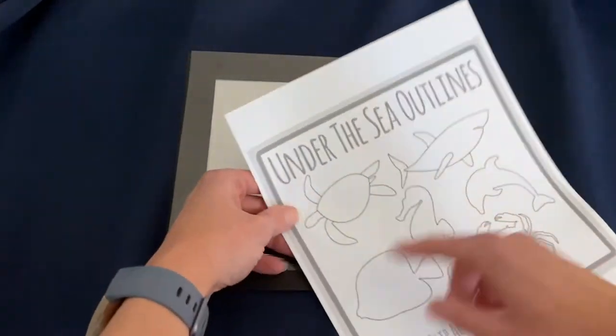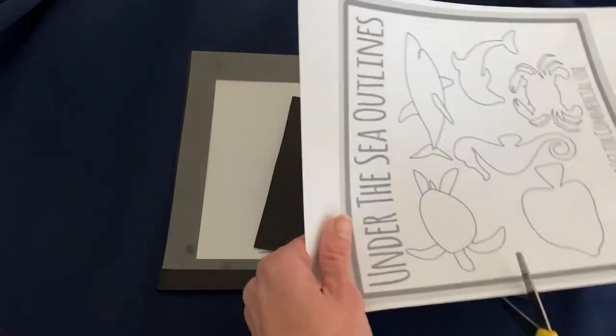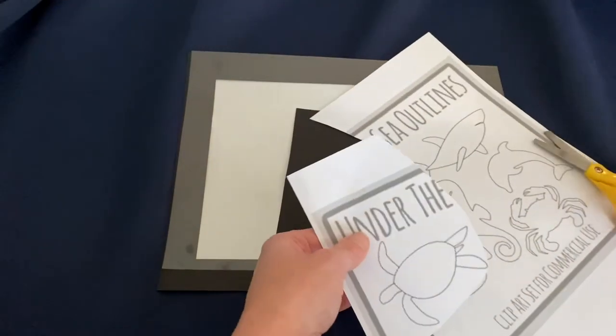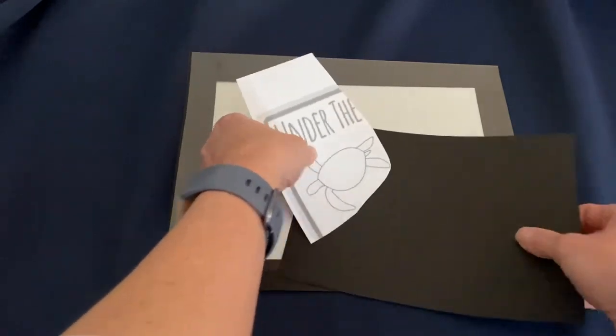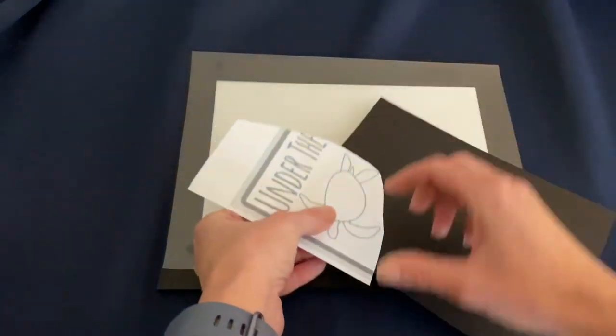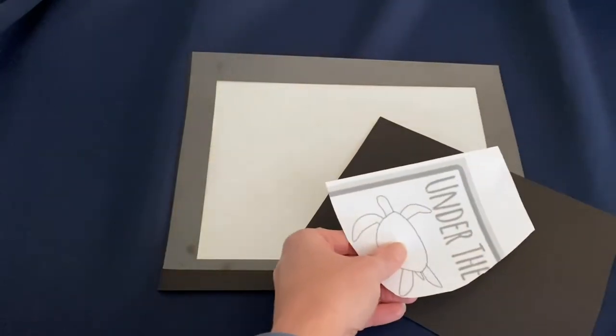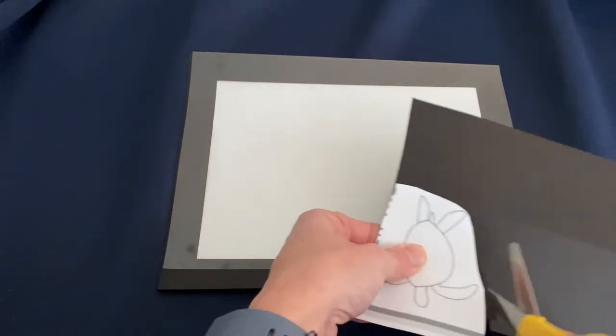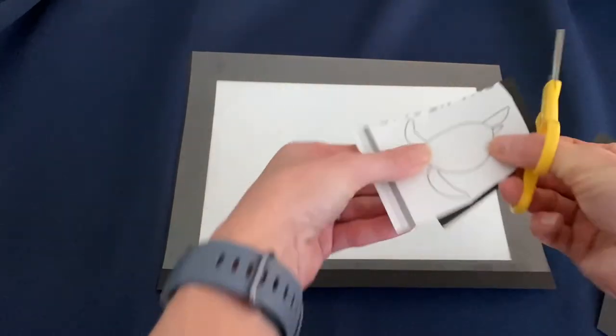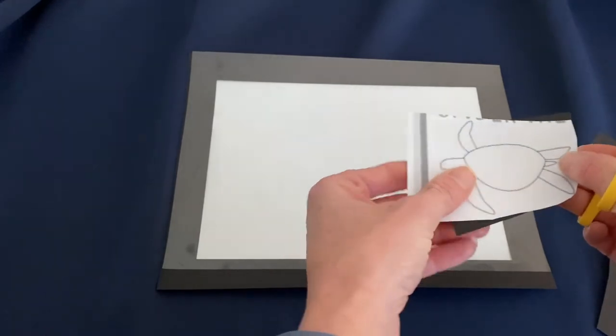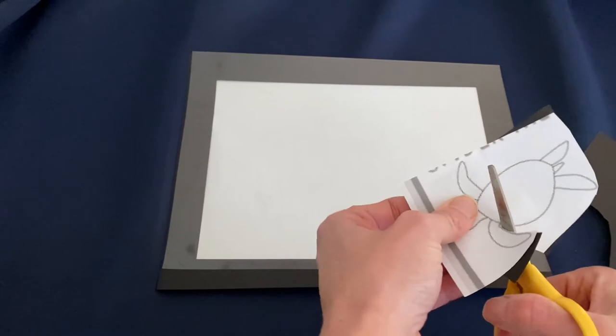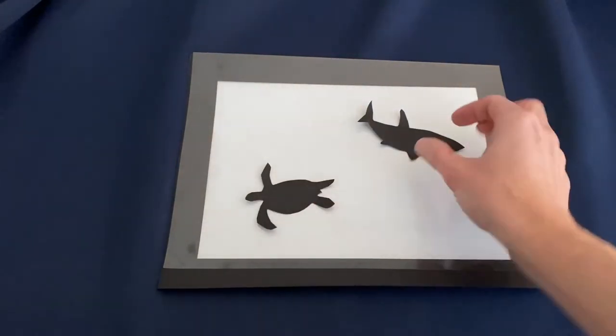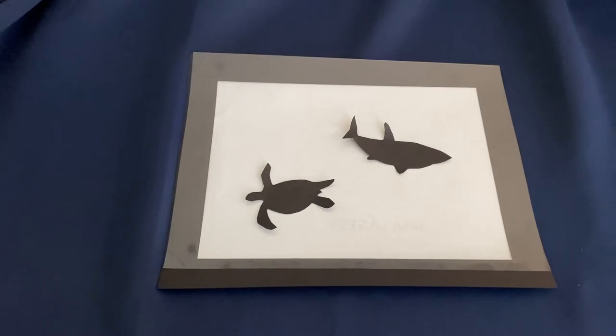You could have your child pick between two and five of these sea creatures. Unless they're making their own, then just draw with pencil and cut them out. I'm going to line this up on top and cut around the turtle shape while holding the black paper. I'll end up with a black silhouette of a turtle. I decided to do a sea turtle and a shark, but you could do more or make your own fish.